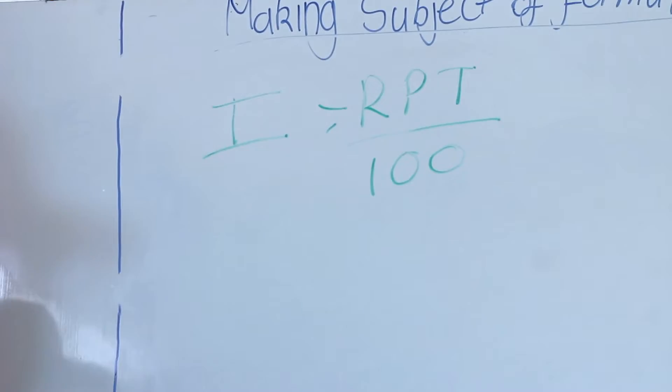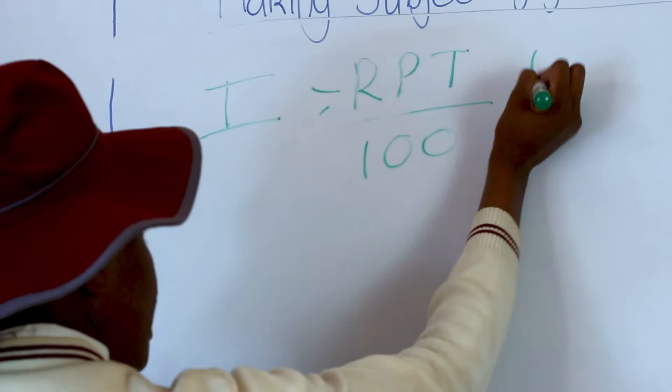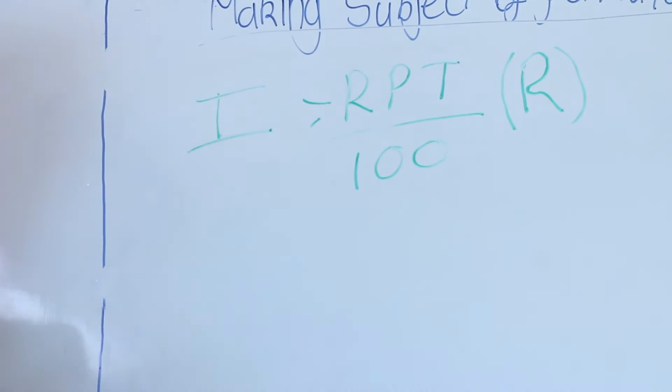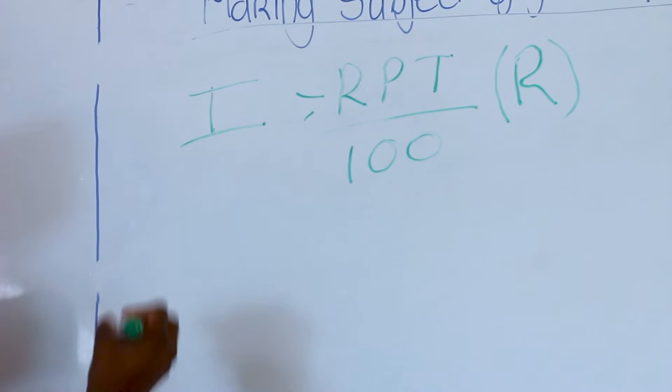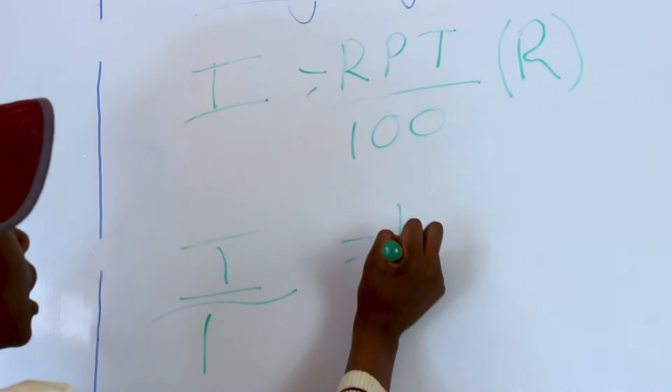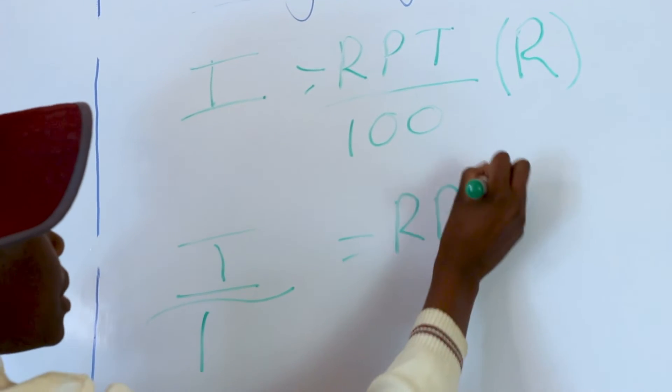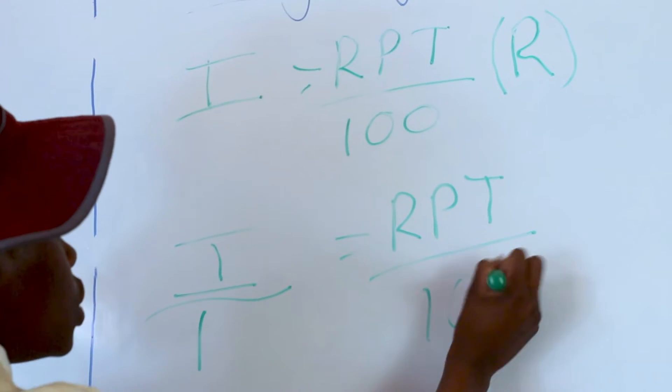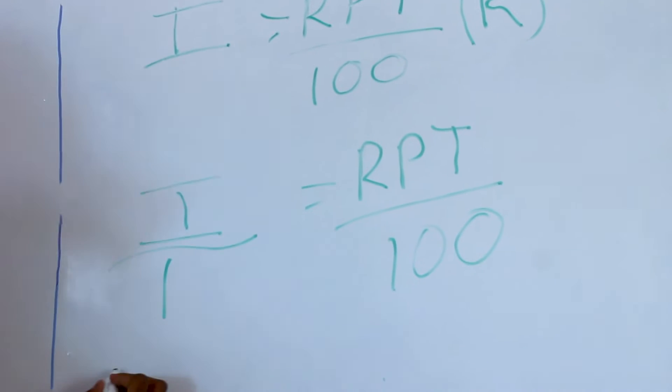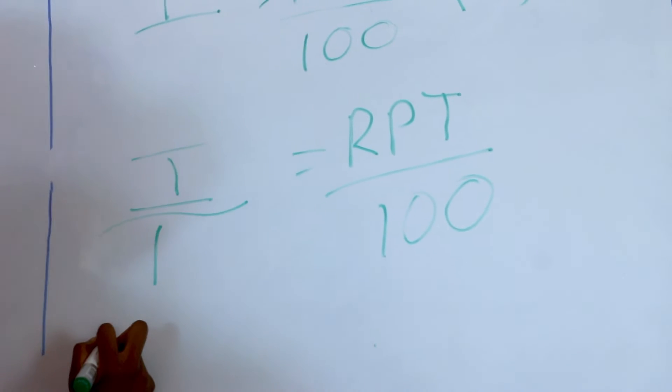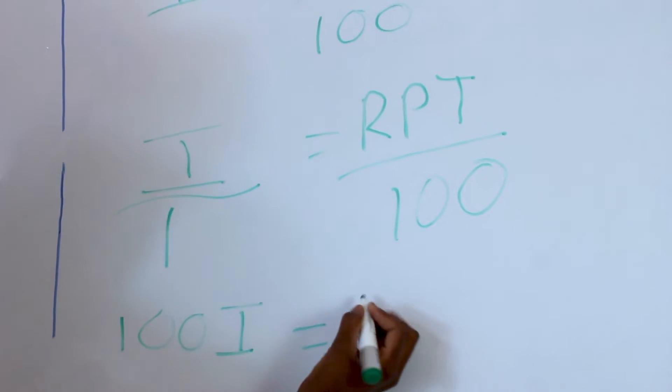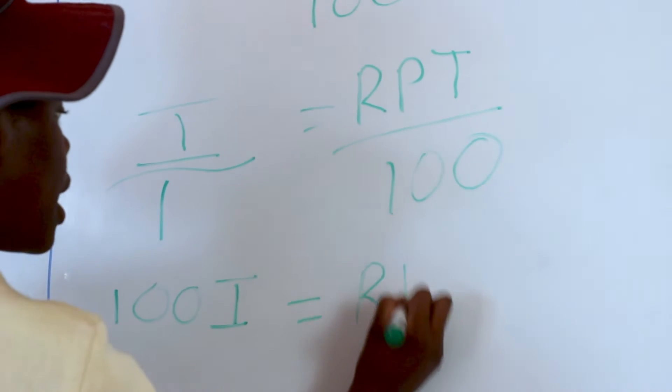Now we want to make I the subject of formula. Here we need to divide both sides, so I is divisible by one. PT over 100. And now we need to cross multiply, so it will be 100I equals to RPT.